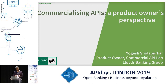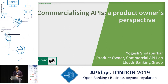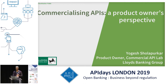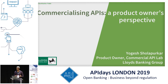The remit for our lab is we build client propositions that happen to be API-enabled — propositions as in products and services. We are not just building internal APIs; we are not building APIs as simple connectivity. It's an end customer proposition that we build. Clients tend to be businesses because we are in the commercial bank — small-medium enterprises, mid-corporates, large-corporates, and financial institutions.